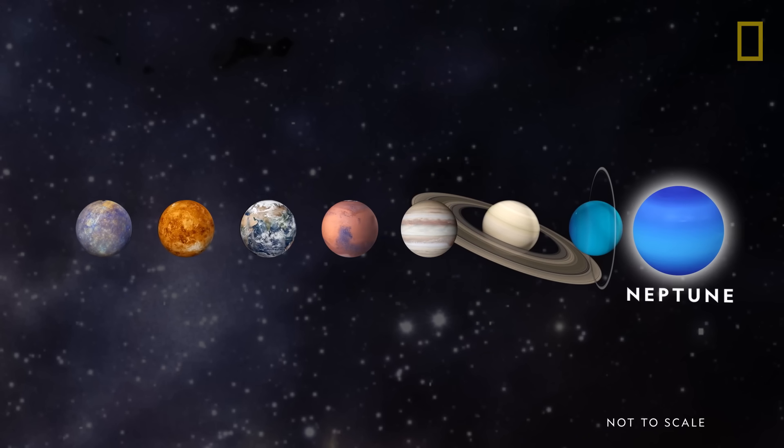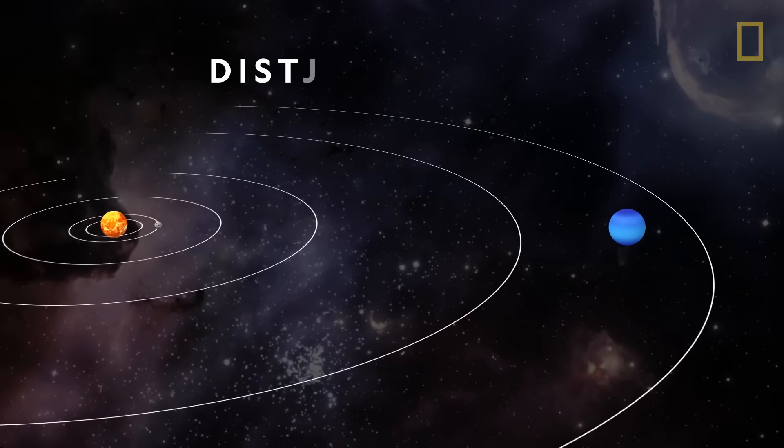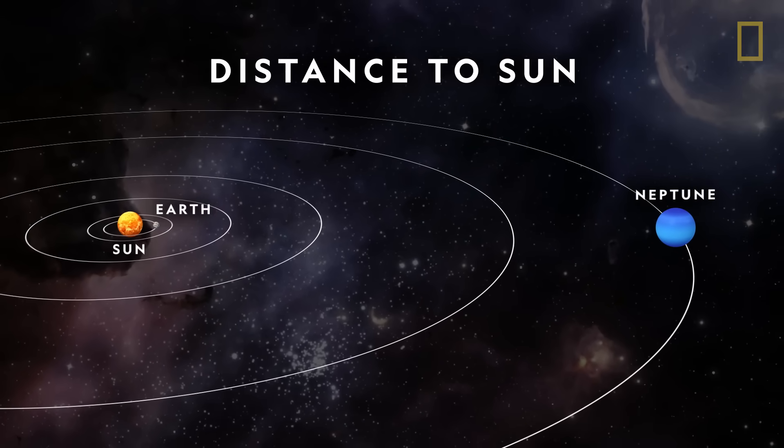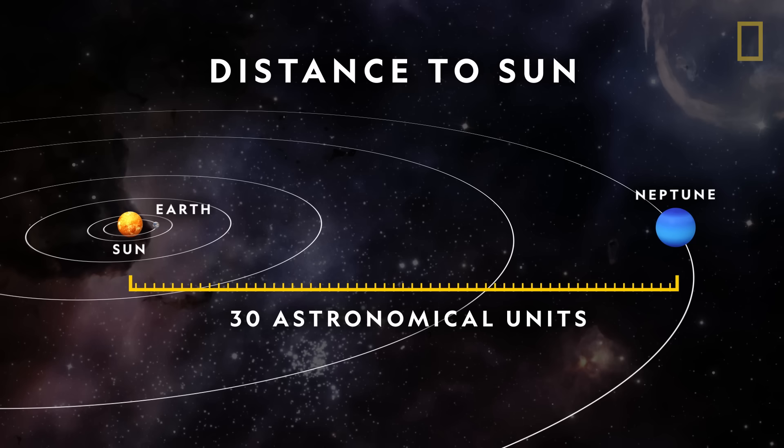Neptune is the eighth planet from the sun. At about 30 times the distance between our star and the Earth, or 30 astronomical units, Neptune is the most distant planet in our solar system.